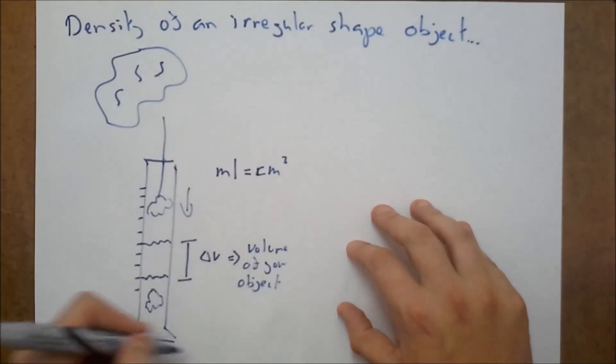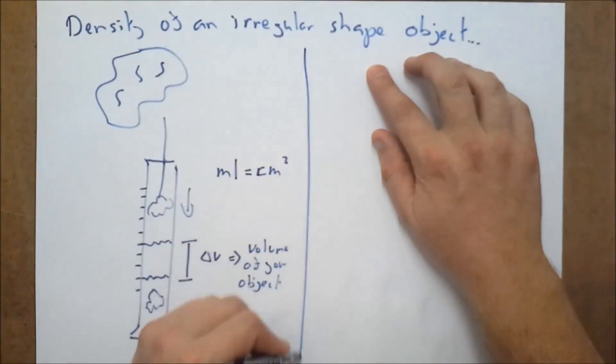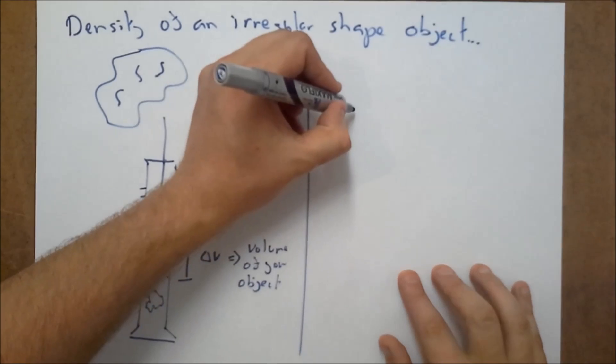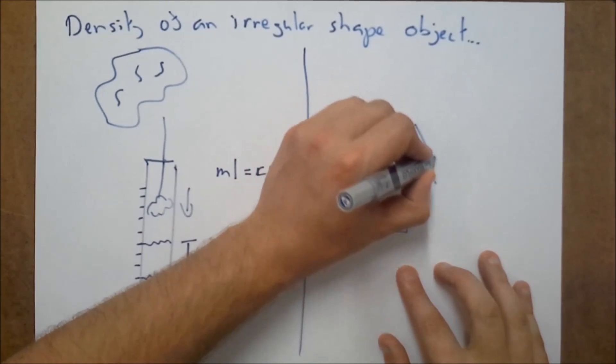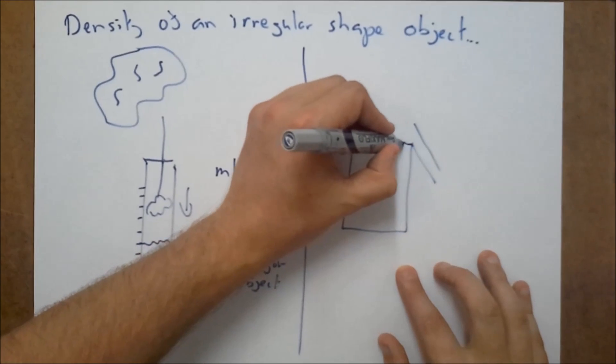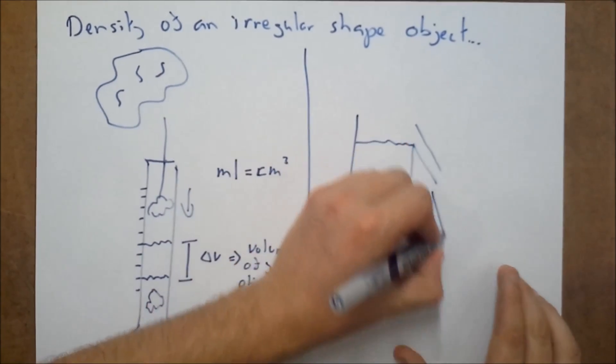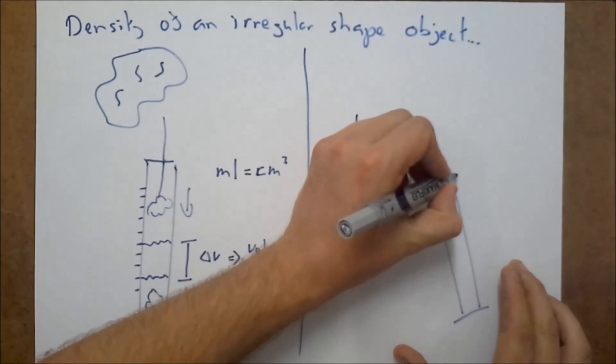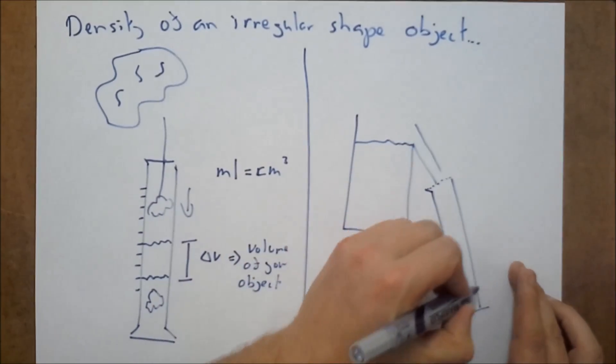So that's one method where you use a measuring cylinder. Another way you can do it is if you get something called a Eureka can. And you fill it up completely with water. And you have your little measuring cylinder here. There's a nice little measuring cylinder.